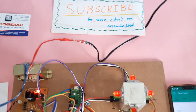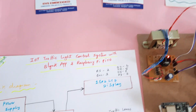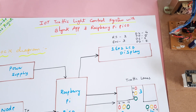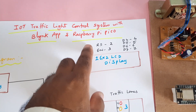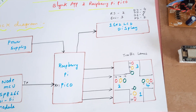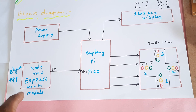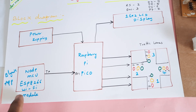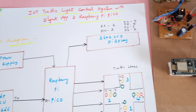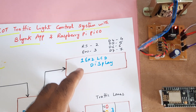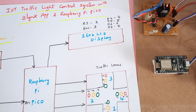We are from SVSM. The project title is IoT Based Traffic Light Control System with Blynk app and Raspberry Pi Pico module. We are using a NodeMCU ESP8266 with Blynk app communication, a Raspberry Pi Pico module, and those are connected with a 16x2 LCD display using pins RS, Enable, D4, D5, D6, D7.